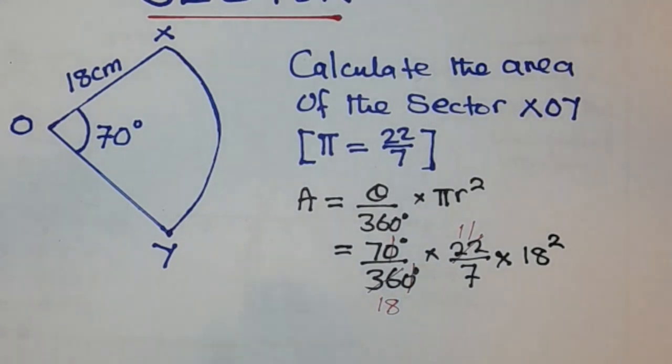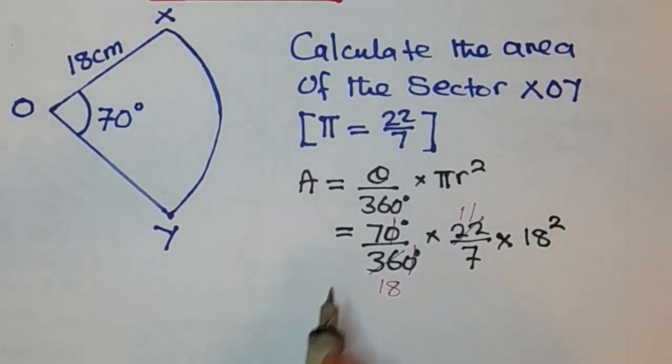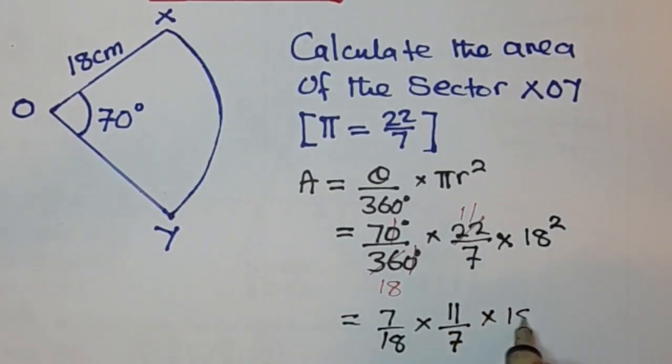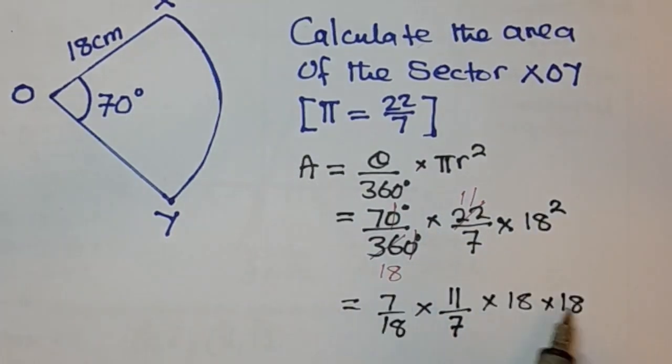So what is remaining now here is 7 over 18 times 11 over 7 times 18 squared is same as 18 times 18. So you need to be careful in the way you are working out your answers, because this is paper 1, and paper 1 does not need you to use a calculator.